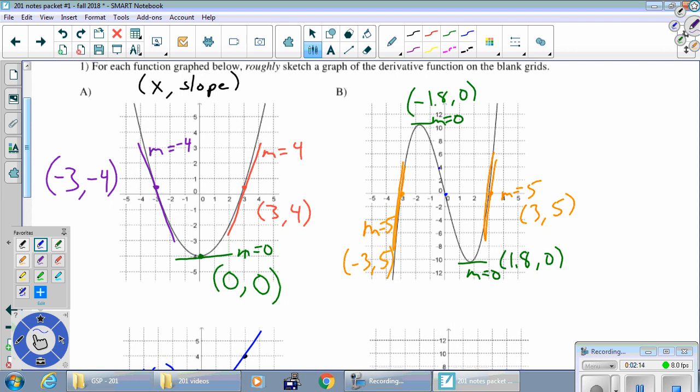So this slope right here is downhill. Doesn't look quite as steep to me, so maybe that's a slope of negative 3. For sure, you've got to give me a negative, maybe not quite as big as the 5s that we were doing before. And so when x is 0, the slope is negative 3.